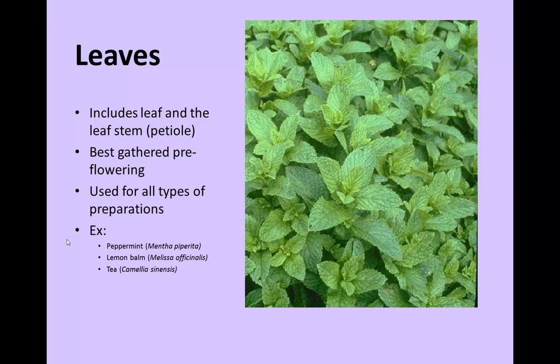The leaves include both the leaf and the leaf stem, the petiole. This is a common type of herbal medicine. For example, plants like peppermint, lemon balm, and even tea, Camellia sinensis, are the leaf. These plants are often gathered pre-flowering, specifically because the chemistry will often change when the plant is flowering. This happens a lot in the mint family — herbs like basil and mint change once the plant flowers. Leaves are used for all types of preparations and have a much longer gathering window than some other plant products.